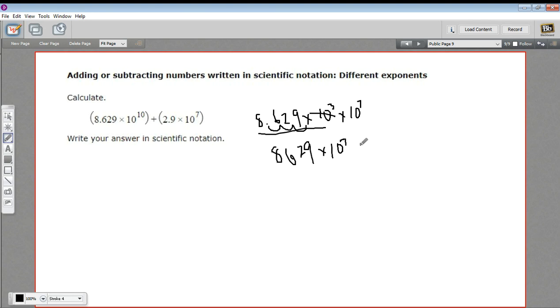Now I can add this to the 2.9 times 10 to the seventh because the exponent parts are the same. So now I just add this part and this part and set it multiplied by 10 to the seventh.